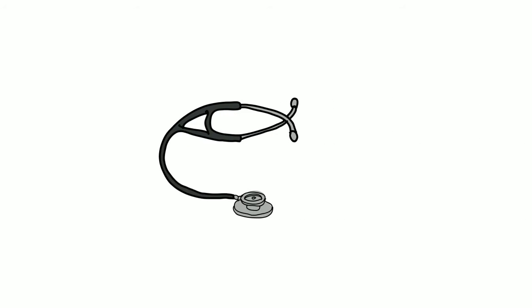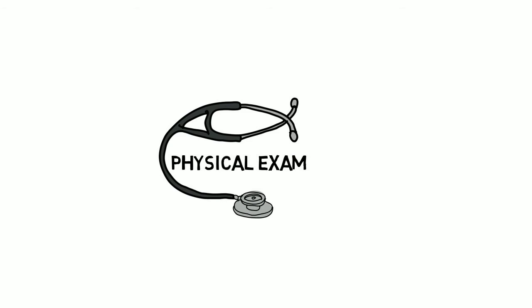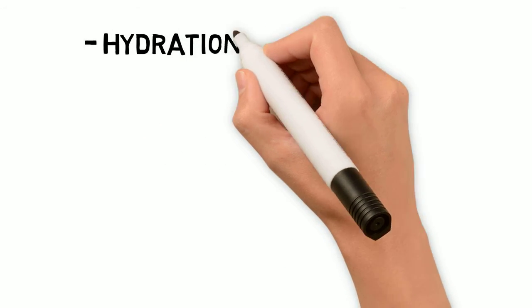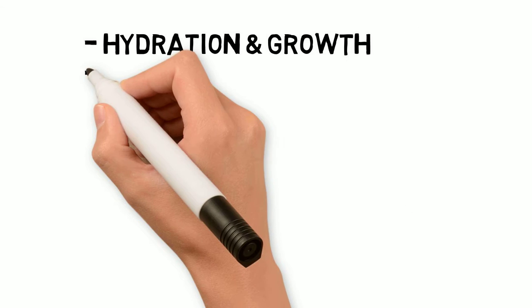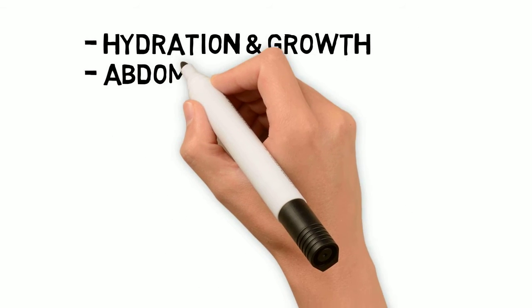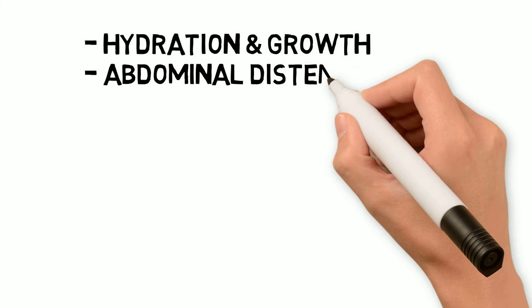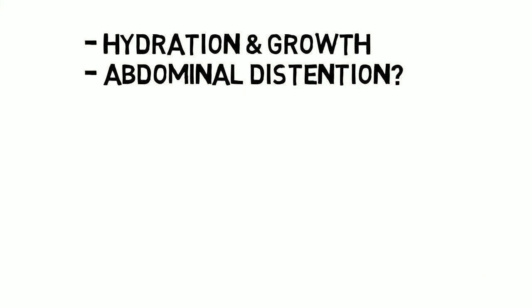Let's move on next to the physical exam. A complete physical should of course be performed, but let's look at some specific areas to highlight when considering an obstructive differential. First, we want to look for any signs of dehydration or any concerns with growth and weight gain. A thorough examination of the abdomen is key. Does it appear distended? The degree of distension can help to give you an idea of how proximal or distal the obstruction might be.